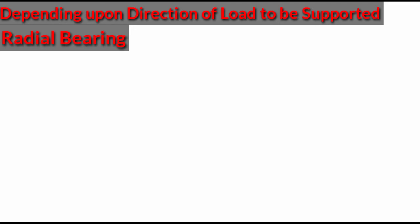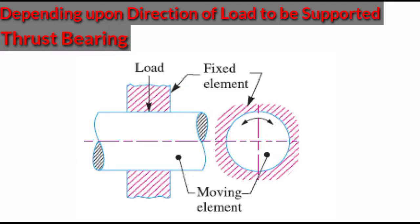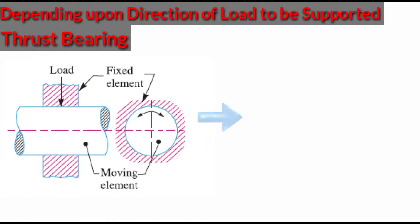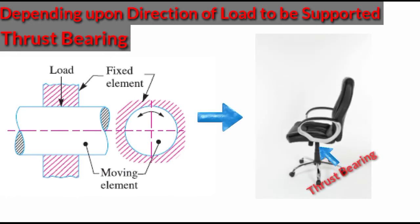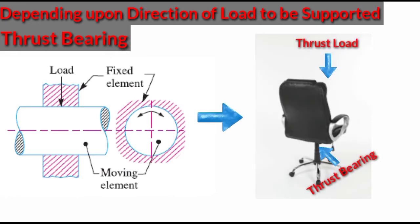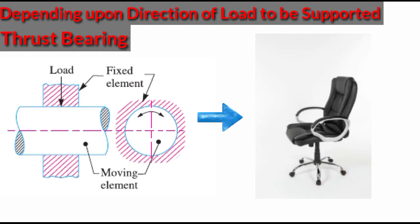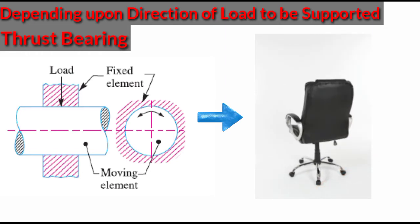Thrust bearing: a thrust bearing is a particular type of rotary bearing. Like other bearings, they permit rotation between parts, but they are designed to support an axial load — loads act along the axis of rotation. A bearing used in a bar stool is subjected to thrust bearing; it is loaded purely in thrust and the entire load comes from the weight of the person sitting on the bar stool.